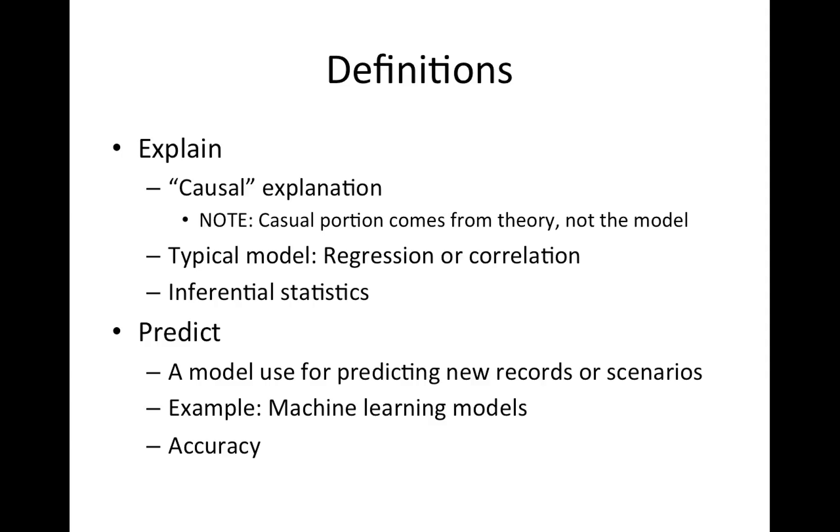When people are designing an experiment, typically you have some type of theory backing up what you're doing, and typically that theory has a causal relationship involved with it. So the causality comes from the theory and not from the model. You can't prove causality with the statistical model. Typical models are regressions, correlations, and importantly the end game here is inferential statistics.